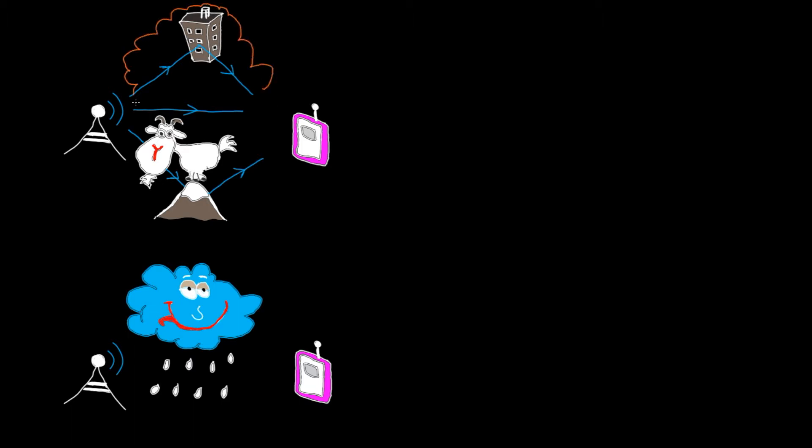Technically the echo problem is usually referred to as multi-path and this scenario is usually referred to as a fading channel as it fades or distorts some frequencies.